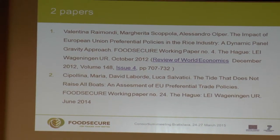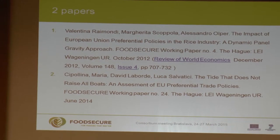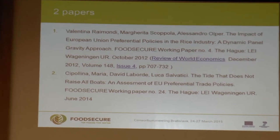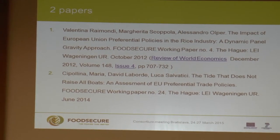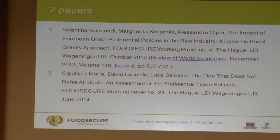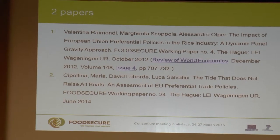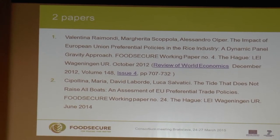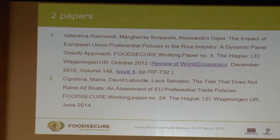The first paper is a work by Valentina Raimondi, Barca Scoppo, and Alessandro Hopper — a researcher involved in different teams in this project. It concerns the impact of EU preferential policies in the rice industry, using a dynamic panel gravity approach. This is a food security working paper also published in the Review of World Economics.